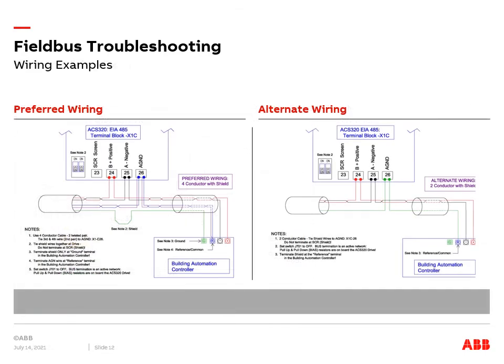There are two recommended methods of wiring field bus connections into the VFD's RS-485 terminals. One method utilizes a four conductor cable with a shield, while the other method uses a two conductor cable with a shield. The four conductor method is preferred, but the two conductor method is acceptable as an alternate wiring method.